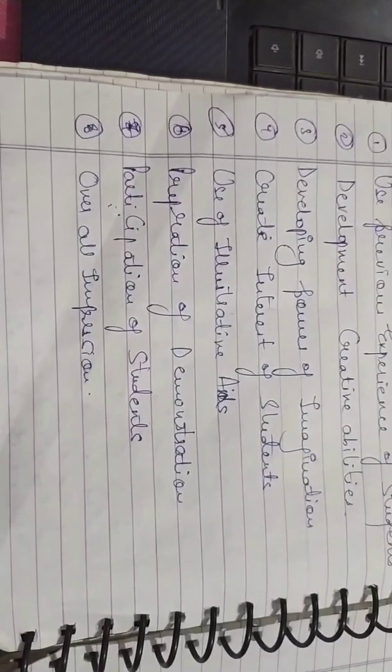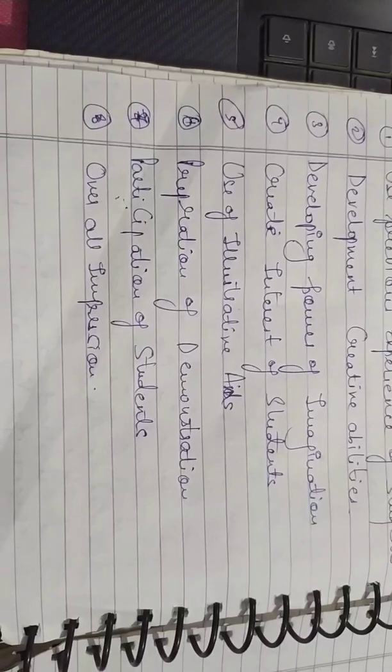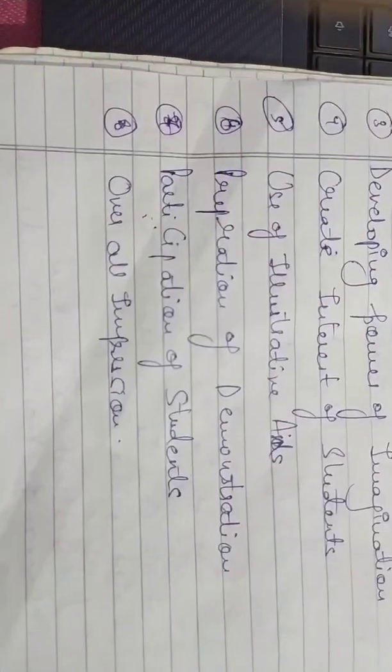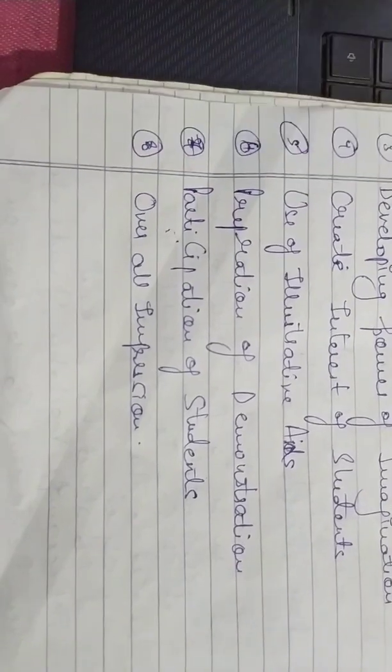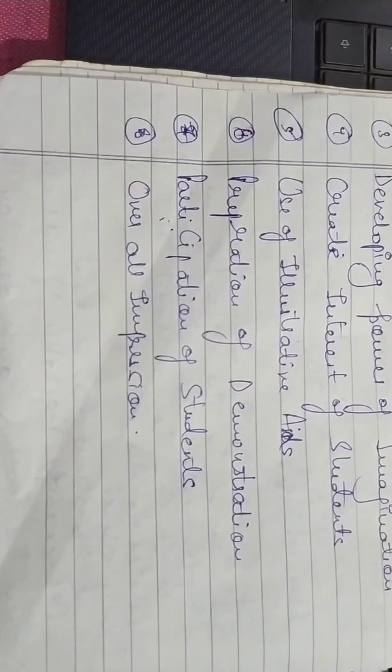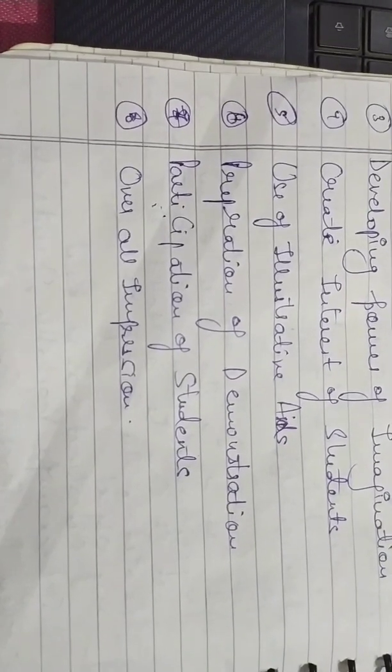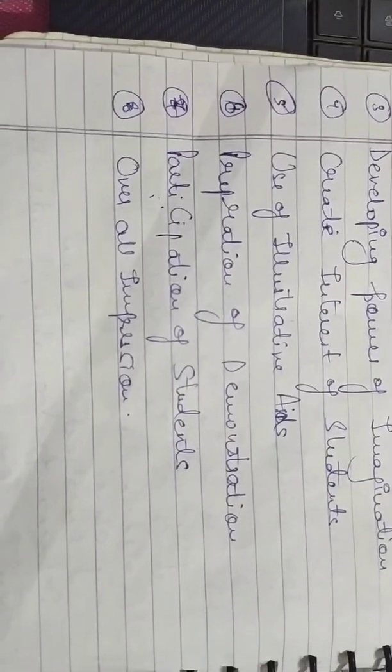The fifth component is use of illustrative aids — which aids we use during our teaching, and how well they relate to the topic. The sixth is preparation of demonstration — how we prepare the demonstration and how relevant the aids are. The seventh is participation of students — how we get students to participate in the topic, which is very important. And then overall expression — based on all these, we will get a rating on the rating scale.